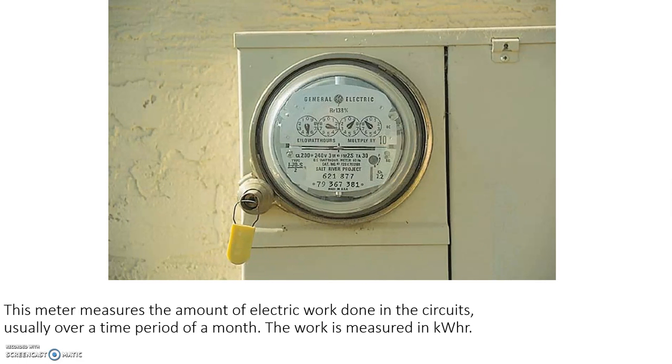This meter that's somewhere around your house, maybe electrical, maybe analog like this one, measures how much electrical work is done by your circuits in a given time. It is measured in kilowatt hours. There's a worker that will come around, read this reading, then read it a month later, and take the difference between those two numbers. That's how many kilowatt hours you used.